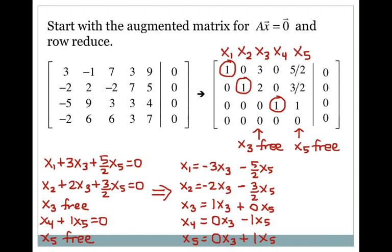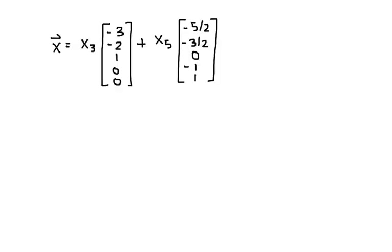Filling in the remaining entries with zeros, this gives the solution in parametric vector form: X equals X3 times the vector (negative 3, negative 2, 1, 0, 0) plus X5 times the vector (negative 5/2, negative 3/2, 0, negative 1, 1). The first vector is multiplied by the free parameter X3 and the second by X5.